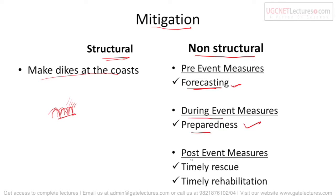Post-event measures include timely rescue and rehabilitation — knowing where people will be rehabilitated and housed. For example, in the 2011 Japan Fukushima tsunami, people were prepared in advance and timely rehabilitated, because that tsunami had many after-effects and people were out of their homes for many years.